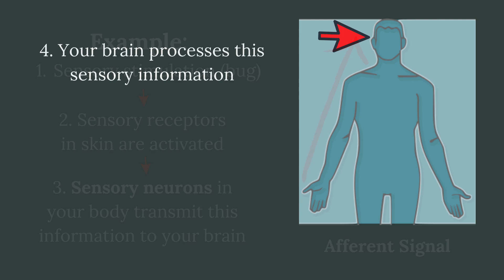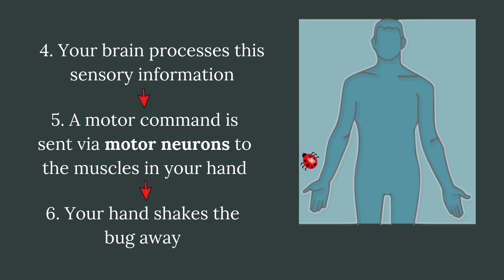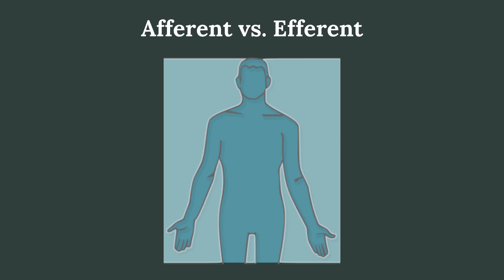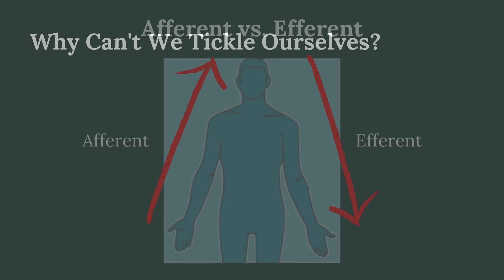Your brain will process this information and send a motor command via motor neurons to the muscles in your hand to shake the bug away. These signals from the motor cortex to the muscles are called efferent signals. The difference between afferent and efferent signals is that afferent signals travel towards the brain from sensory receptors, and efferent signals travel away from the brain towards your muscles.